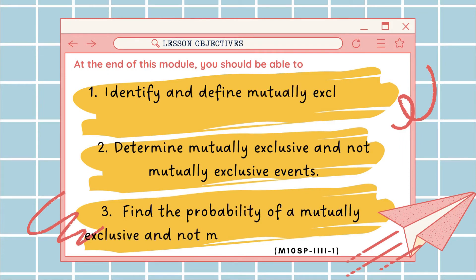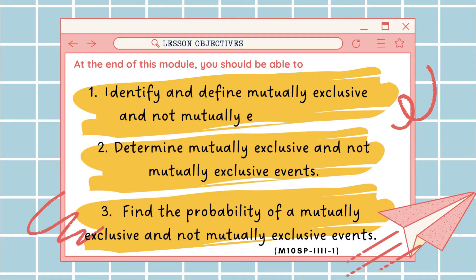Our lesson objectives: at the end of this lesson, you should be able to: 1. Identify and define mutually exclusive and not mutually exclusive events. 2. Determine mutually exclusive and not mutually exclusive events. 3. Find the probability of mutually exclusive and not mutually exclusive events.